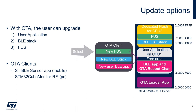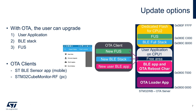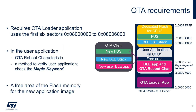The OTA update procedure follows a client-server architecture, where the STM32WB acts as an OTA server. The OTA is initiated by an external client, such as the mobile STBLE sensor app or the STM32Cube Monitor RF. To use the OTA, there are three requirements from the STM32WB side.